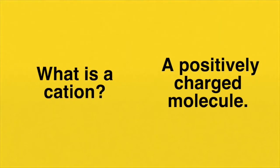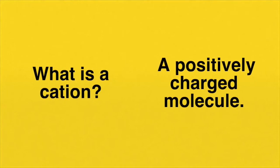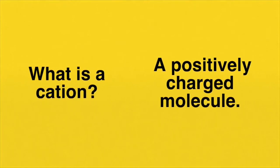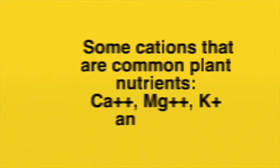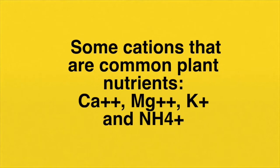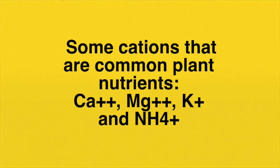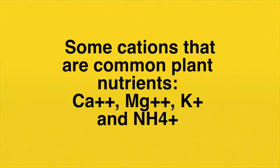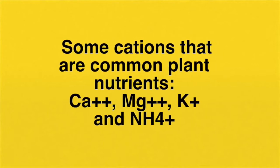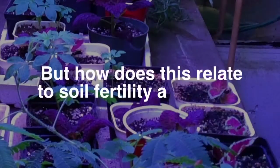So what is a cation? Well, simply put, it's a positively charged molecule. Some important nutrients that are available to your plant as cations are calcium, magnesium, potassium, and nitrogen in the form of ammonia.